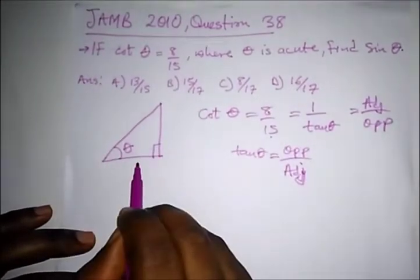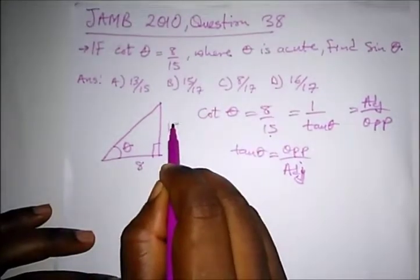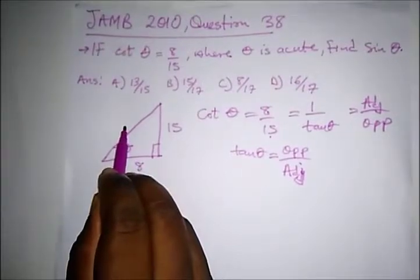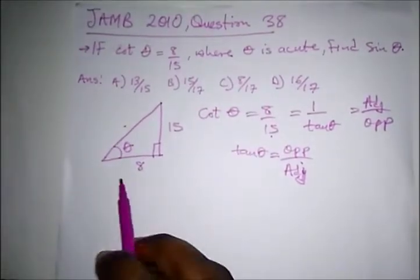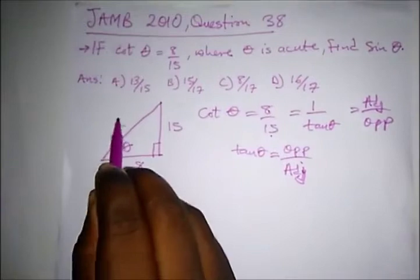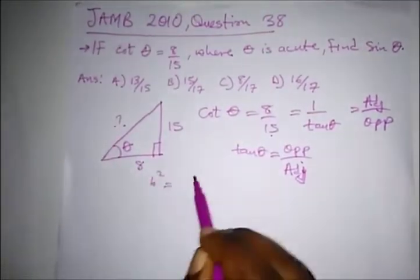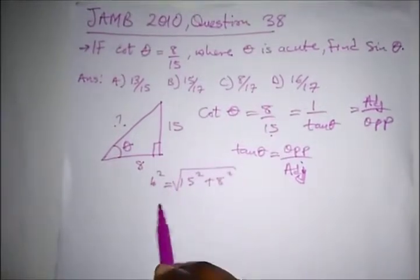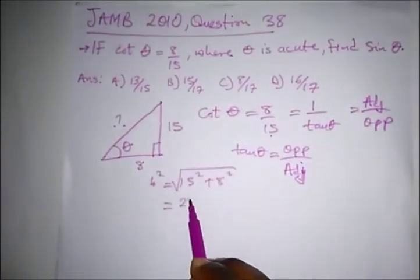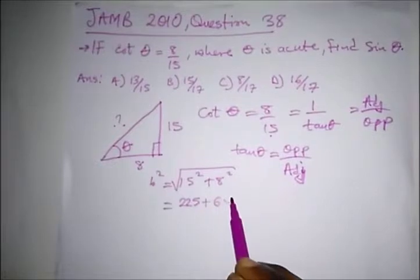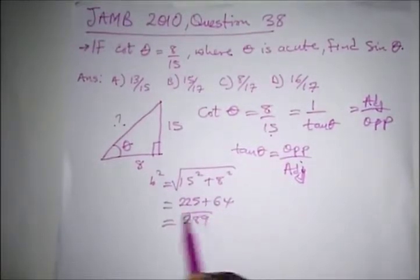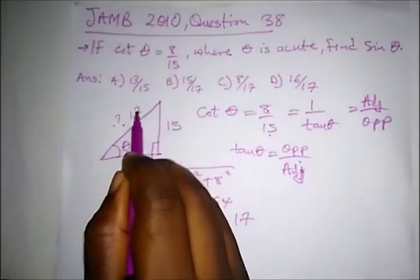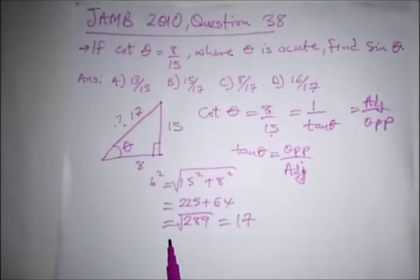So the adjacent side is 8 and the opposite side is 15. To get the hypotenuse, we apply Pythagoras' rule: b² = 15² + 8². That gives us 225 plus 64, which equals 289. The square root of 289 is 17, so this side is 17.